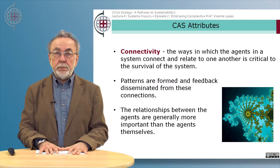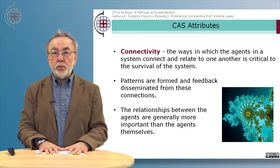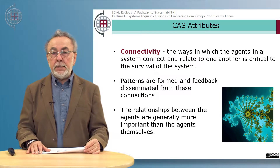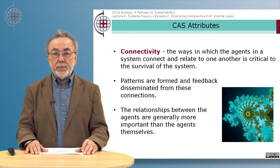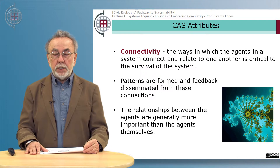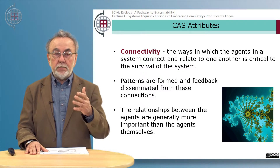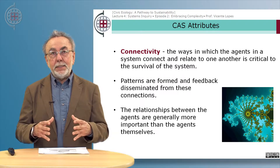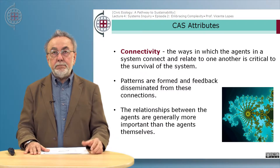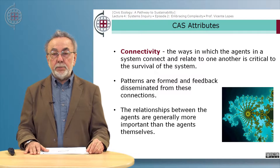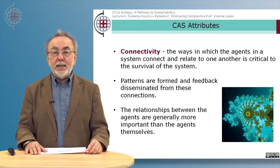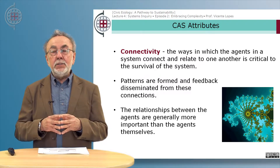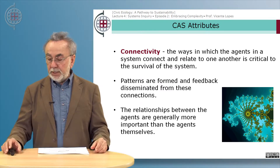Connectivity is another important attribute of complex adaptive systems, related to the way in which the agents in a system connect and relate to one another — this is critical to the survival of the system. Patterns are formed and feedback disseminates from these connections. The relationships between agents are generally more important than the agents themselves. Think of a football team: when a team is not doing well, one idea is to buy new players, but the success of the team is not necessarily related to any individual player, but in the way the player connects to the other players and thereby improves the general performance of the team.